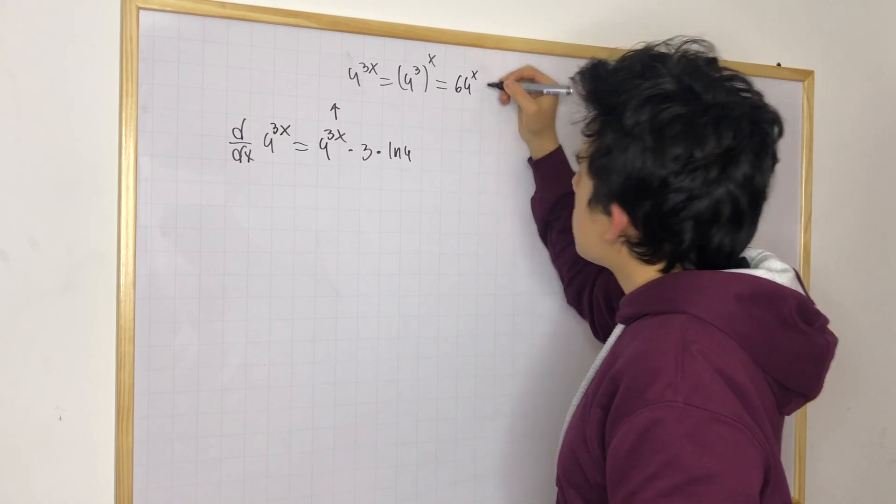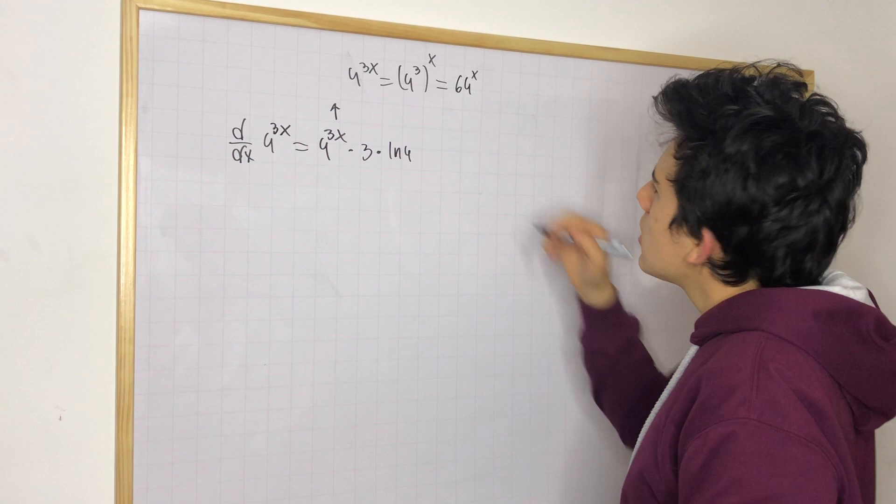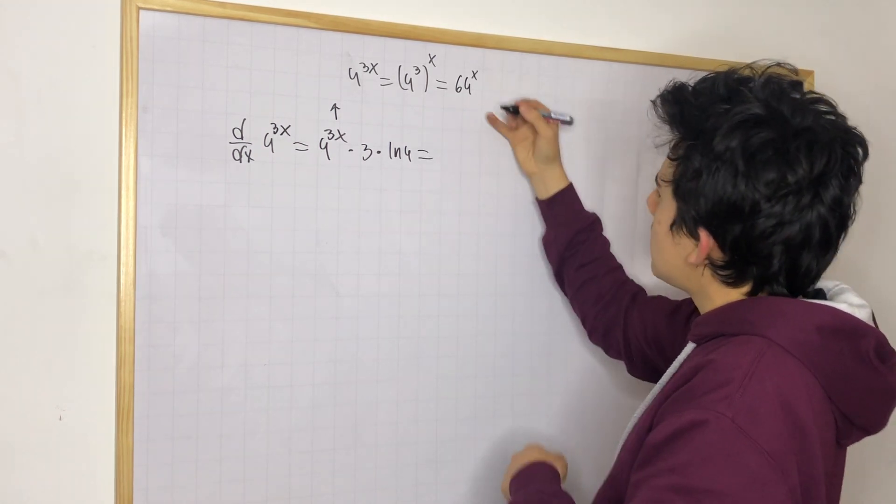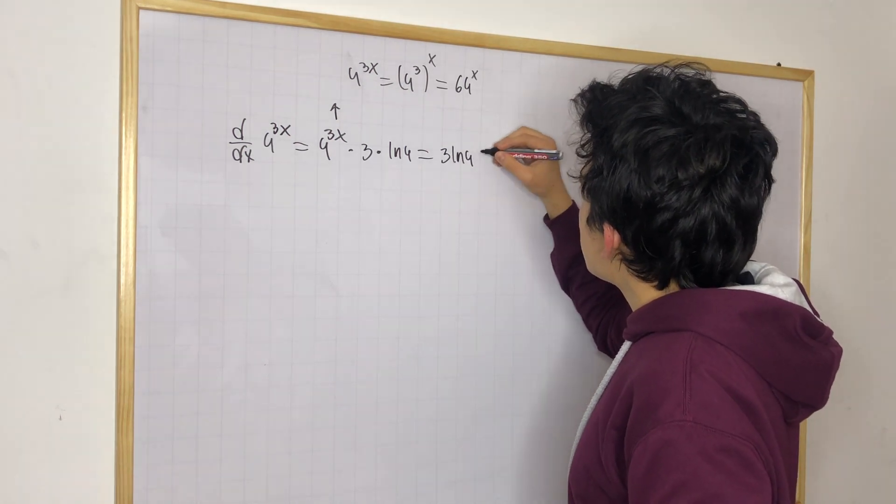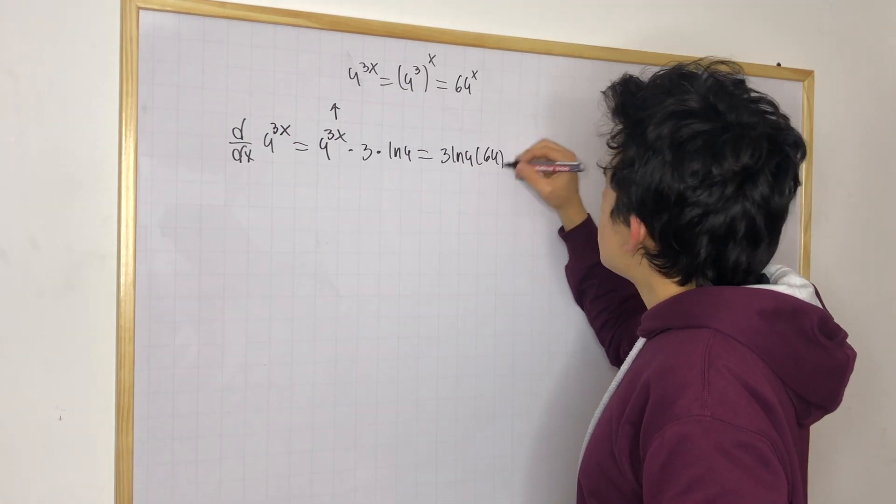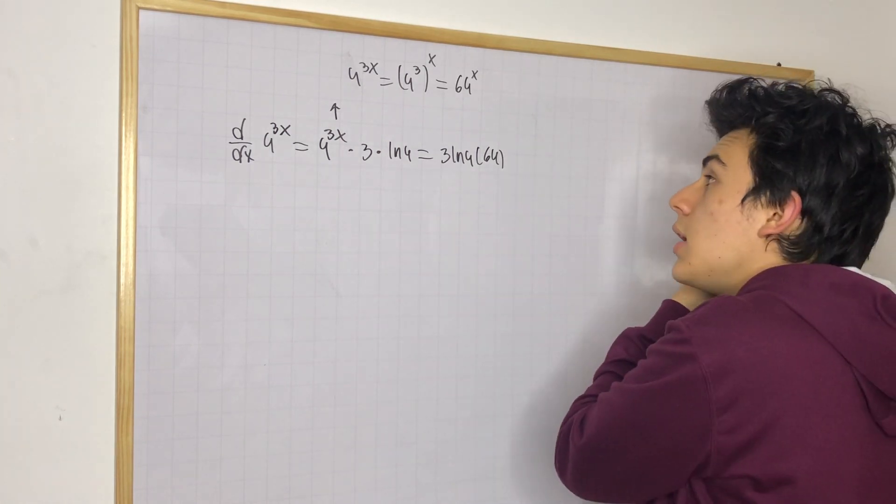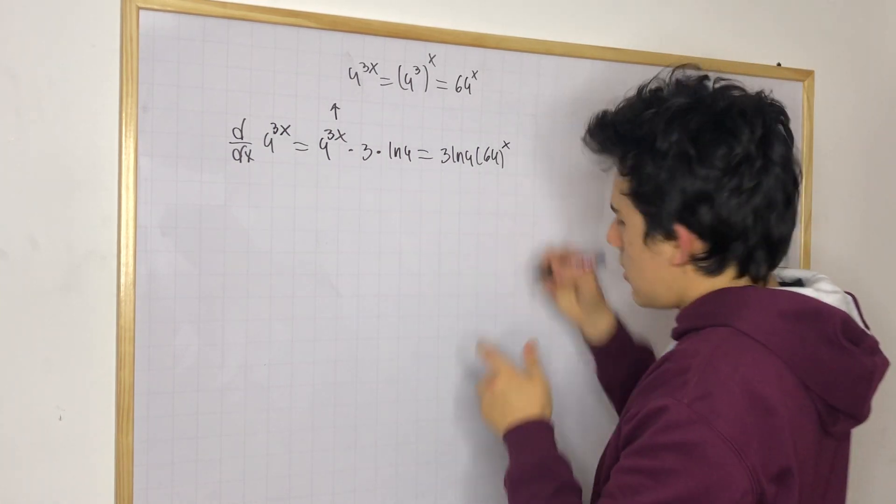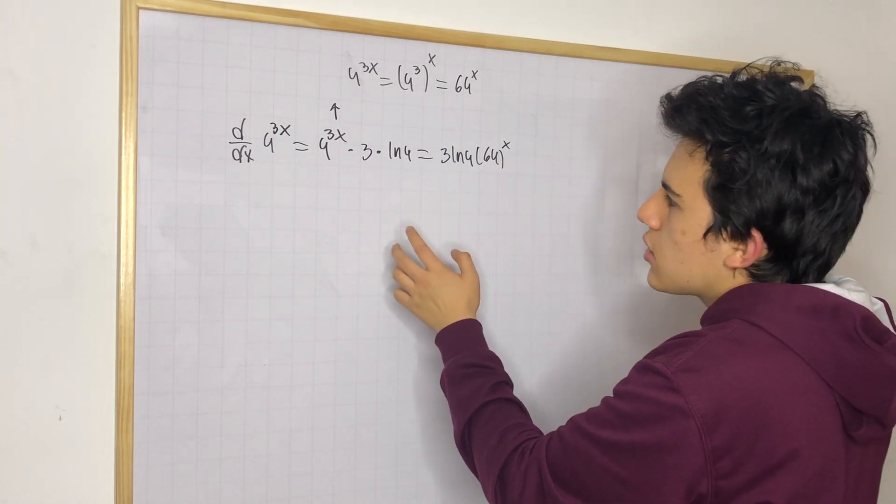So 64 to the x power. We could leave it like that. Just leave this in this form. And then just simply say that this is 3 times natural log of 4. Notation is not the best. Natural log should go in the last place, but you understand it. Times 64 to the x power. This is like the most concise formula.